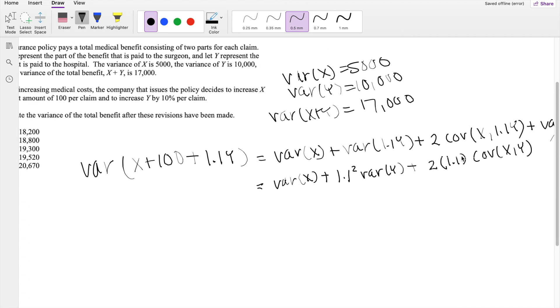Okay, we have everything we need except the covariance. But the good thing about covariance is that we do know that the variance of x plus y is equal to the variance of x plus variance of y plus 2 times covariance of x and y. And because we're given what variance of x plus y is, we can just plug that in there, 17,000 is equal to variance of x, which is 5,000, plus the variance of y, which is 10,000, plus 2 times covariance of x and y.